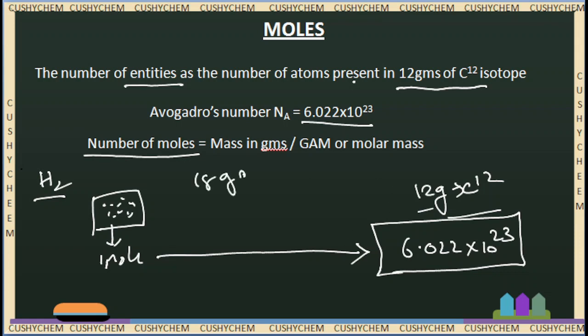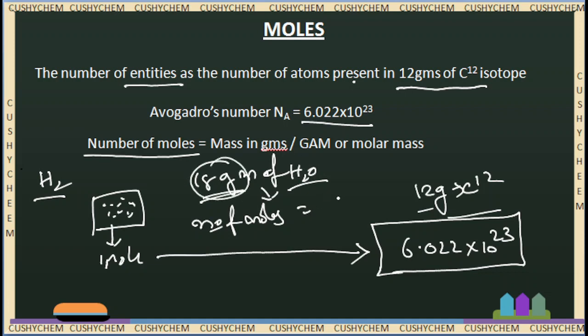For example, we have 36 grams of water. The number of moles equals mass divided by molecular mass. Molecular mass of water is 18, so 36 divided by 18 gives us 2 moles of water. The number of moles equals mass divided by molecular mass.